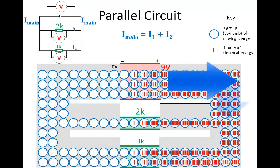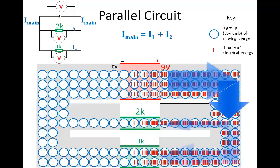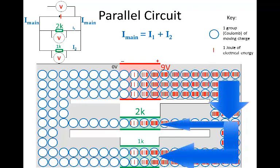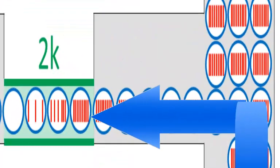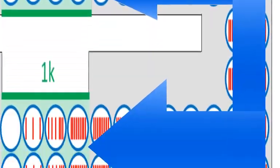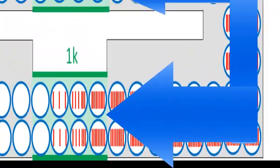All the current has to flow through the main part of the circuit, but at the branches, the current splits. If there are two branches, then at the branch, some of the current goes through one of the branches and the rest goes through the other branch.